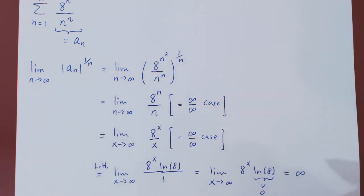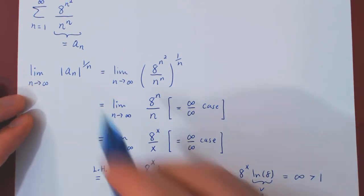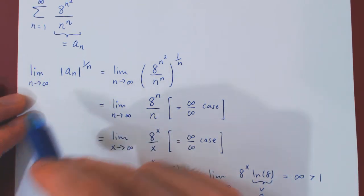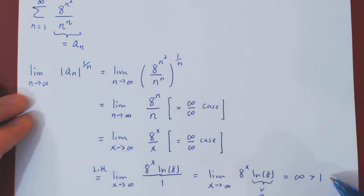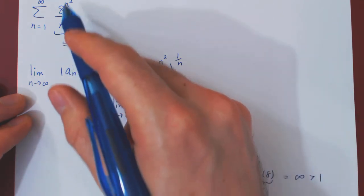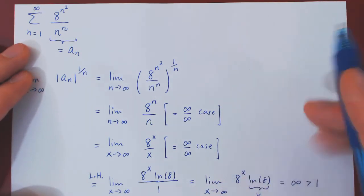Well, if the limit is infinite, it's clearly larger than 1. And if you recall, the root test says that if the nth root of a_n in absolute value is strictly larger than 1, then the corresponding series diverges.